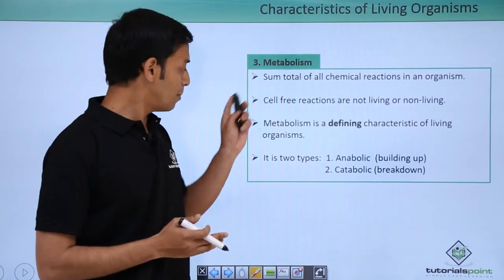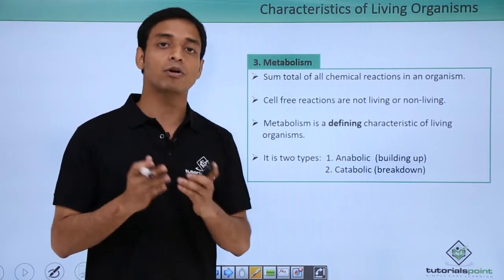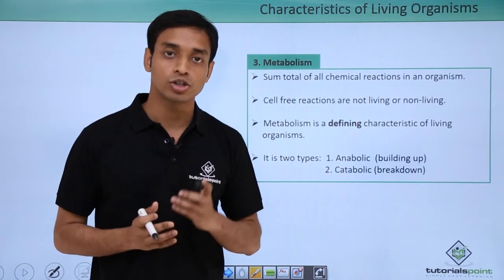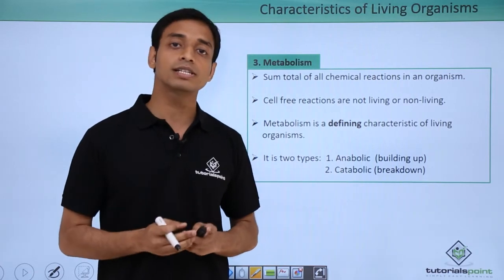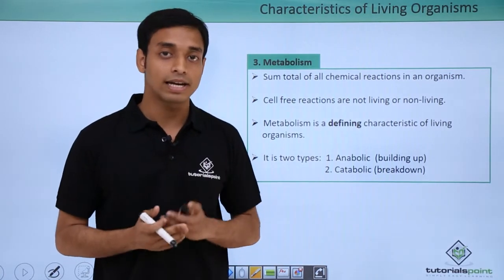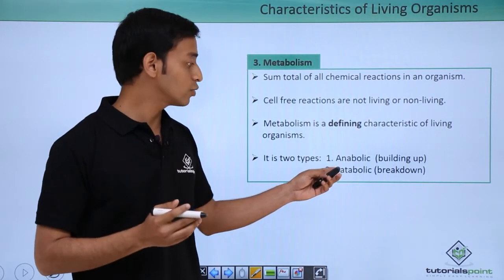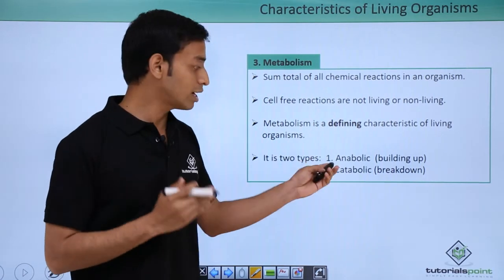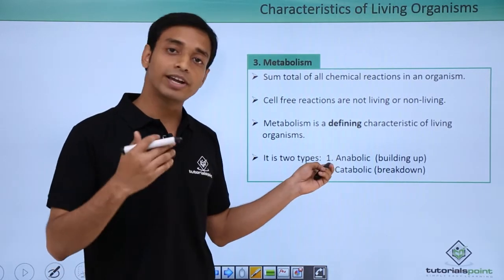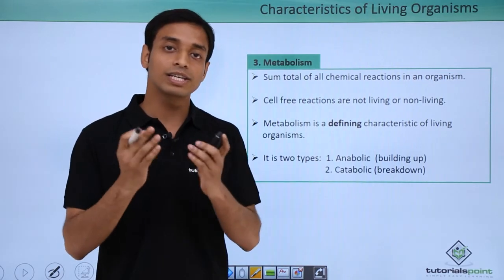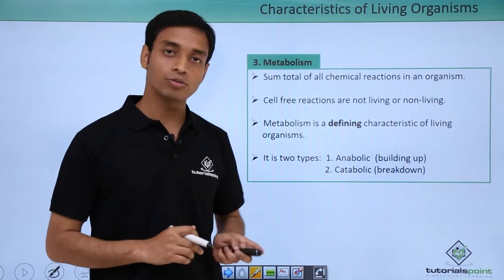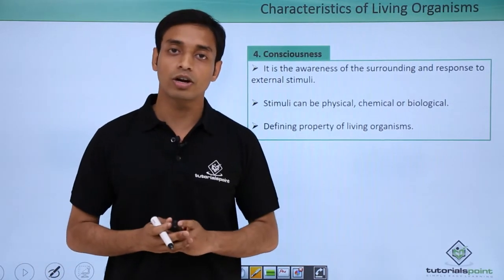Metabolism happens in two types. The first type is anabolic reactions — a build-up reaction where smaller molecules join together to form bigger, complex molecules. A good example is the formation of glucose from carbon dioxide by the process of photosynthesis in plants. The second type is catabolic reactions — a breakdown reaction where complex bigger molecules are broken down into simple, soluble substances. For example, carbohydrates like rice are broken down into smaller molecules called glucose.